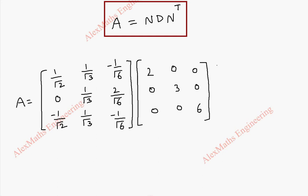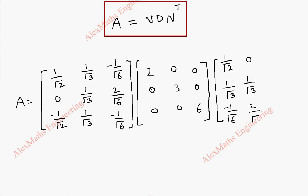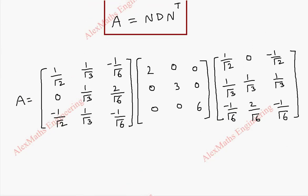Then, N transpose is obtained by changing the rows of N into columns. We take the first row and write it as the first column: 1 by root 2, 1 by root 3, minus 1 by root 6. The second row becomes the second column: 0, 1 by root 3, 2 by root 6. And the third row becomes: minus 1 by root 2, 1 by root 3, minus 1 by root 6. So, we have written the rows of N as columns for N transpose.